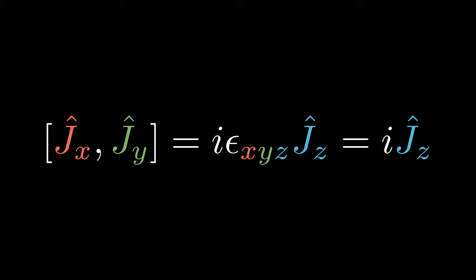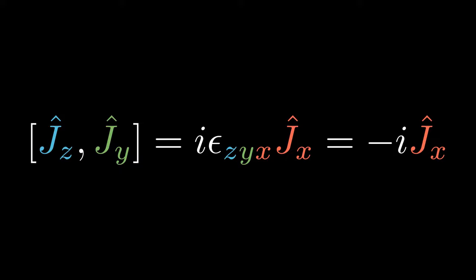For example, the commutator of Jx and Jy is i εxyz Jz = i Jz because εxyz equals +1. The commutator of Jz and Jy equals i εzyx Jx = -i Jx because εzyx equals -1.